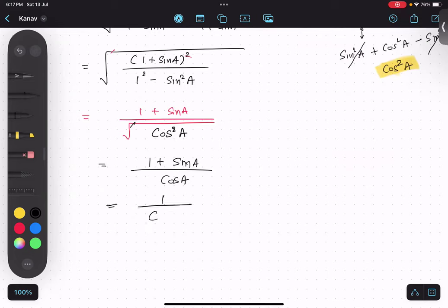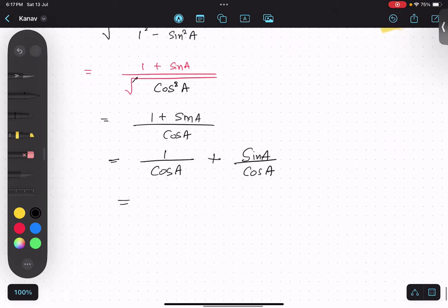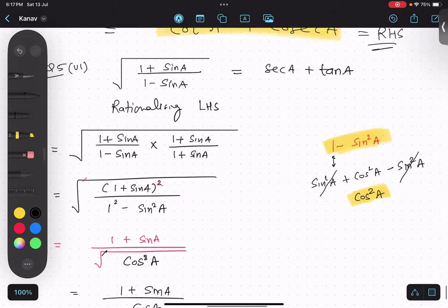One upon cos is sec, and sine upon cos is tan, so I guess we are on the right track.